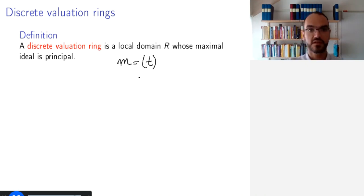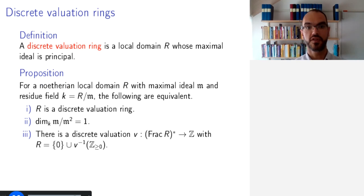So why are these rings called discrete valuation rings? Because of the following. So if you take a noetherian local domain R, call its maximal ideal M, and the residue field R mod M, call it K, then the following three conditions are equivalent. First is R is a discrete valuation ring, as we just defined.